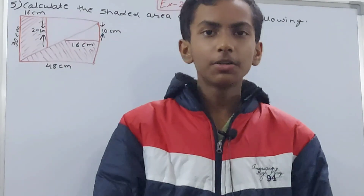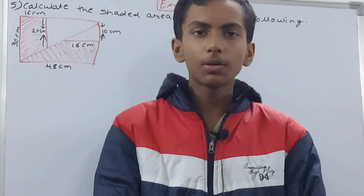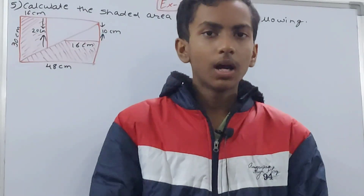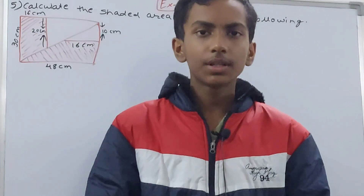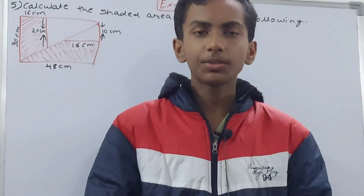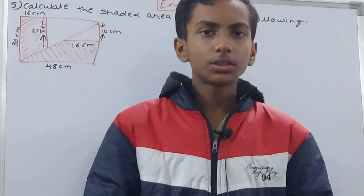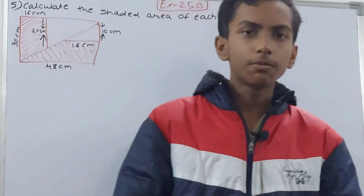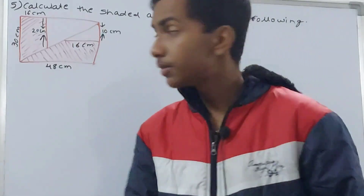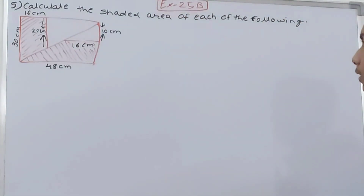Hello friends, welcome back to my YouTube channel Locker Learning. In this video we are going to solve ICSE Mathematics Class 8, Chapter 25, Area of Rectilinear Figures, Exercise 25B, Question 5 — calculate the shaded area of each of the following.